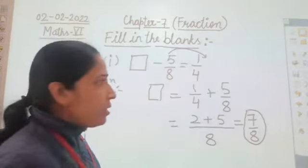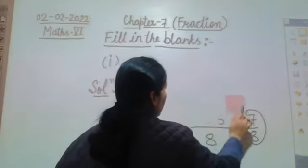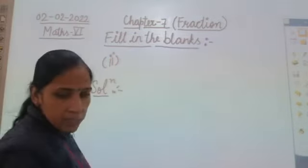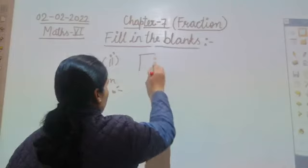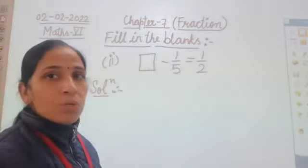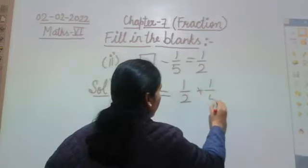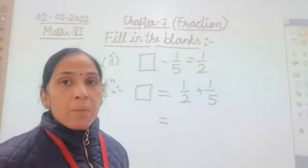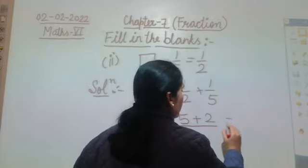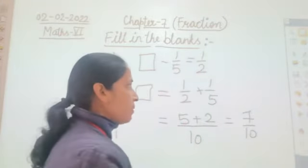Let's take one more example of the same kind. Question 2: blank minus 1/5 equals 1/2. Again, rearrange — the blank equals 1/2 plus 1/5. Since 2 and 5 are prime numbers, their LCM is their product: 10. So 5/10 plus 2/10 equals 7/10. The answer is 7/10. From 7/10, subtract 1/5 to get 1/2.